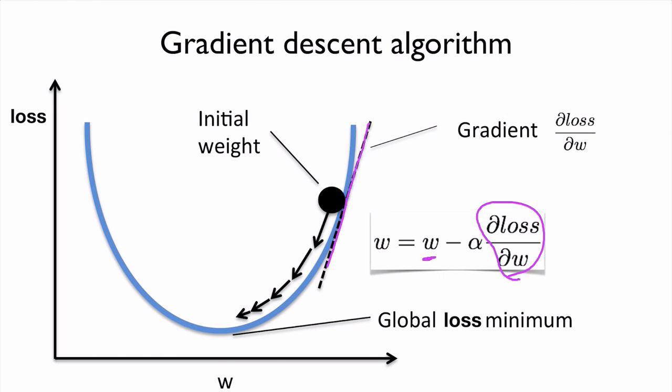Because the gradient is plus, we're gonna move in. W is getting smaller. If gradient is minus, it's getting bigger. So that's why we use minus in here.